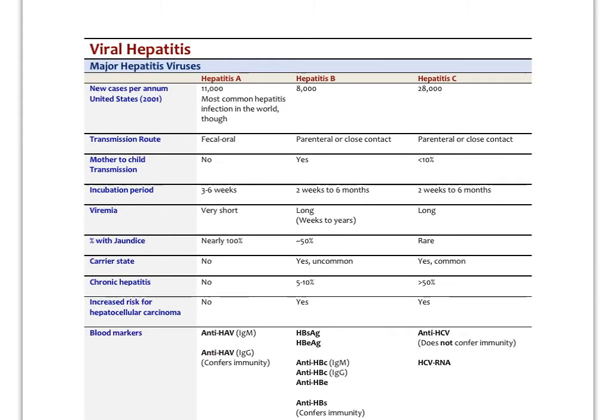Here's a summary of the three major hepatitis viruses: A, B, C. Remember D requires hepatitis B as a co-infection. That's more typical in Africa and other places. Same with hepatitis E. That one is also fecal oral, so it presents somewhat like hepatitis A. Hepatitis A again, fecal oral, most common hepatitis infection in the world. Very little transmission between mother and child.